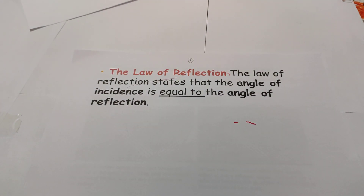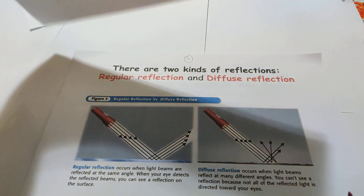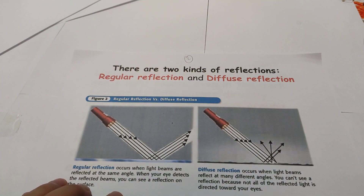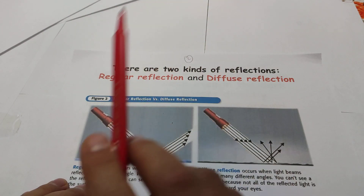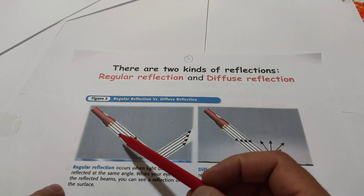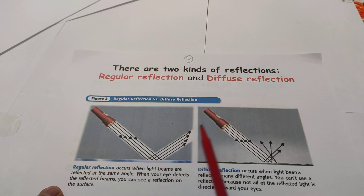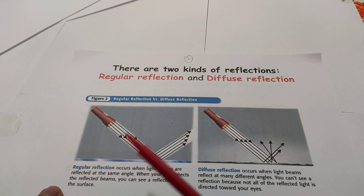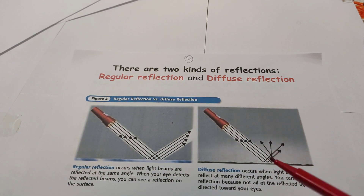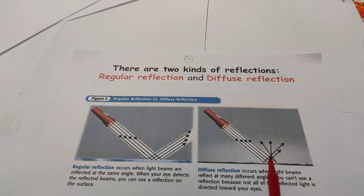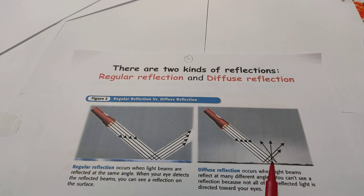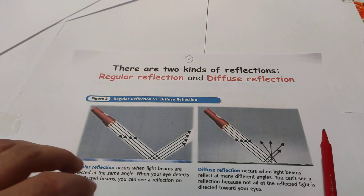There are two kinds of reflection: regular reflection and diffuse reflection. In regular reflection, as you see here, the light comes and reflects regularly — all light reflects in the same direction. But in diffuse reflection, the light comes and reflects in different directions, so the light reflects irregularly. These are called diffuse reflection.